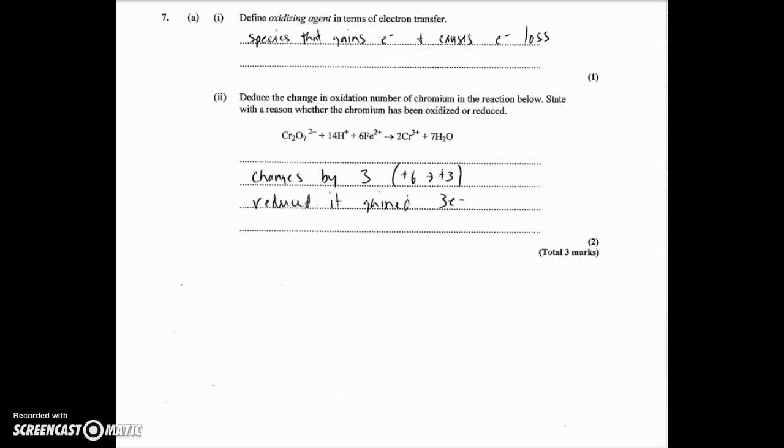7a, define oxidizing agent in terms of electron transfer. And this was only one mark, but IB was very picky about this on their mark scheme. You have to talk about transfer. So transfer means you have to tell me that one species gaining electrons and causing another to lose them. So the oxidizing agent is the species that gains electrons and thereby causes another to lose. So you got a half mark if you only told me it's something gaining electrons.